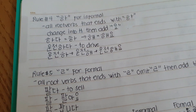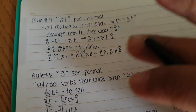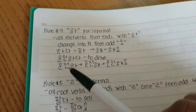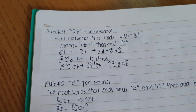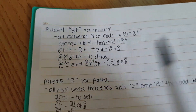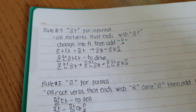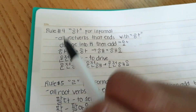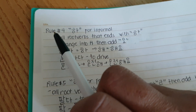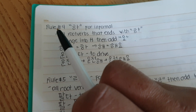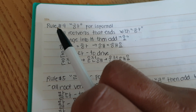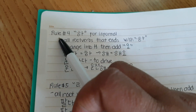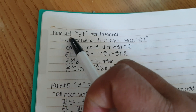Hello everyone, and now we're back. So we're gonna begin with rule number four. We already discussed rule number three. Now we're gonna go to rule number four for present informal Korean words.